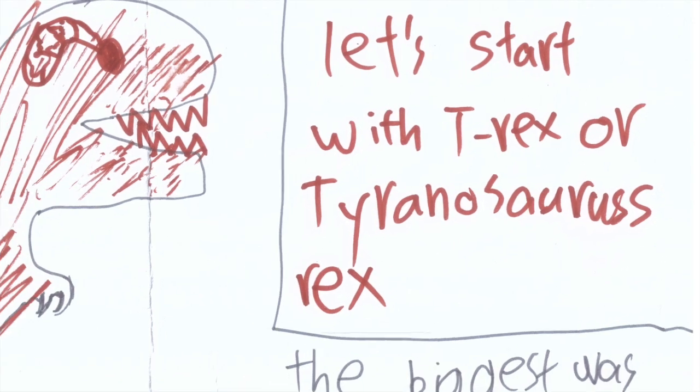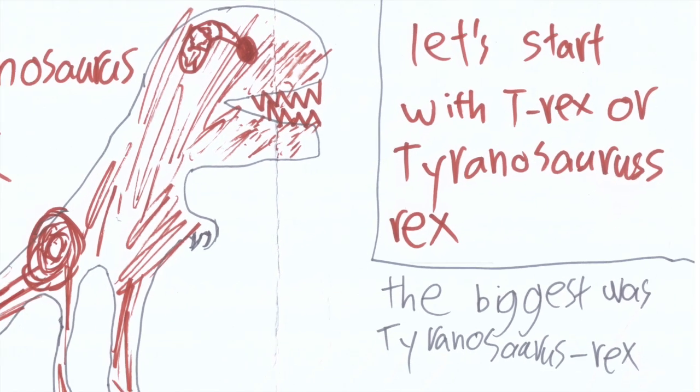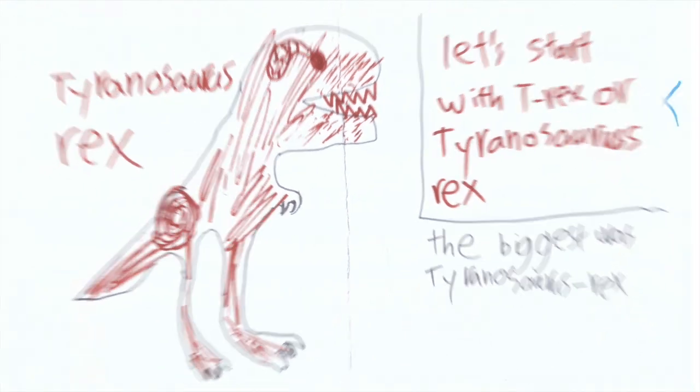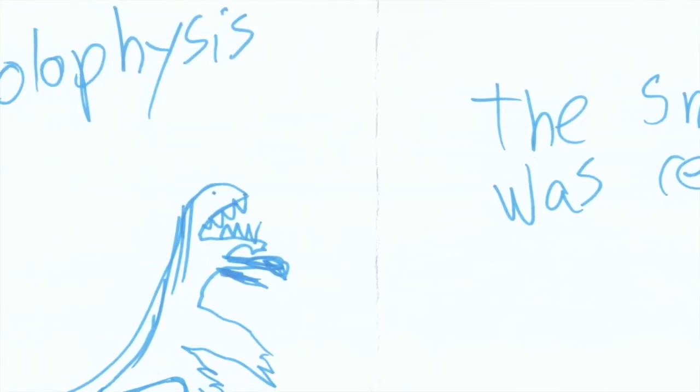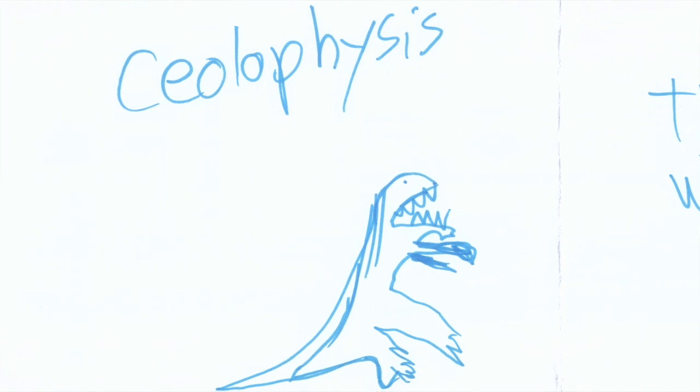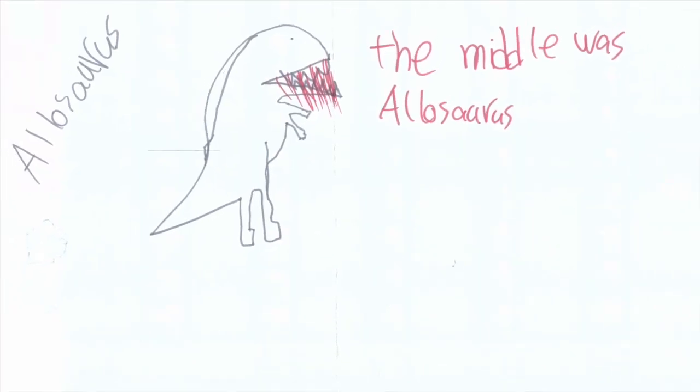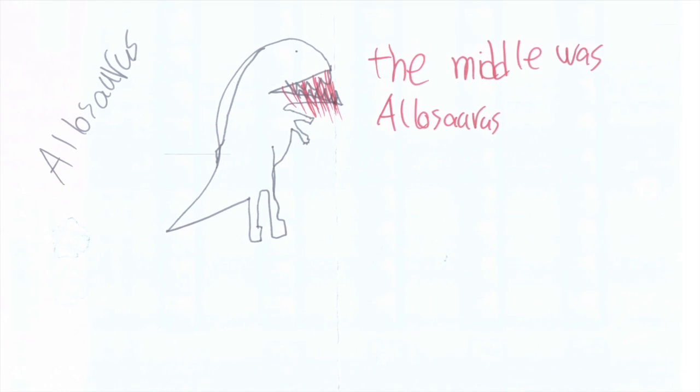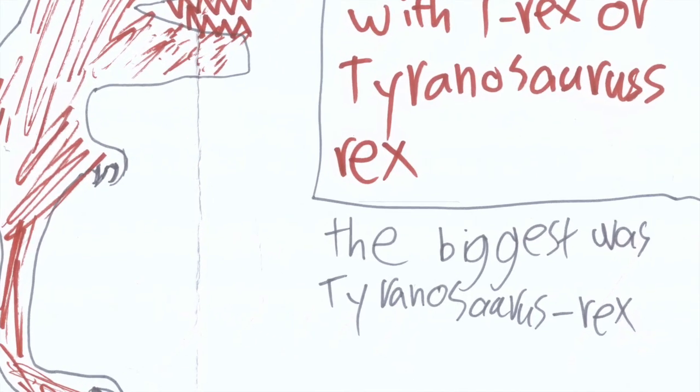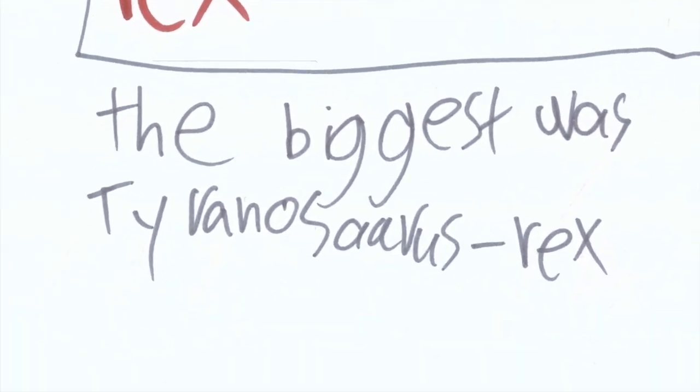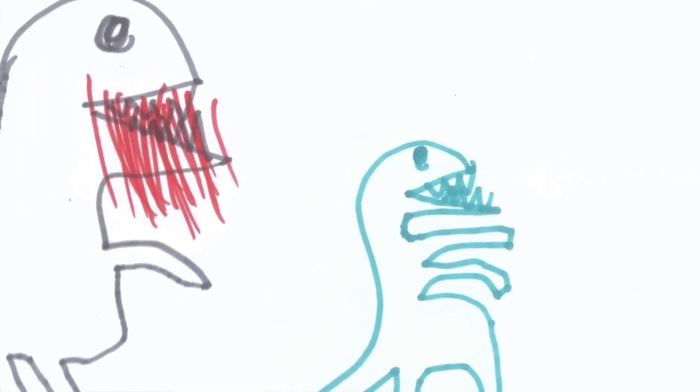Let's start with T-Rex or Tyrannosaurus Rex. The small Tyrannosaurus one, the small T-Rex is the middle one, the Allosaurus, the biggest was Tyrannosaurus Rex. These are three million years that we're going to talk about.